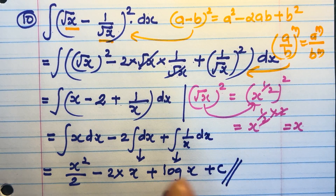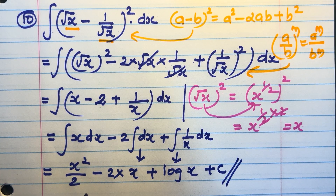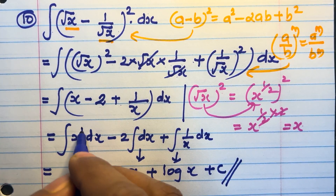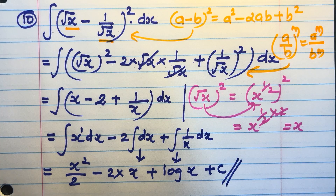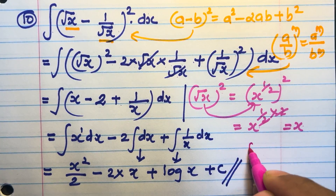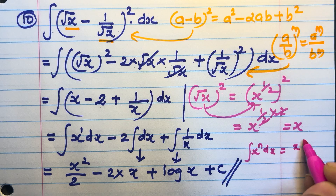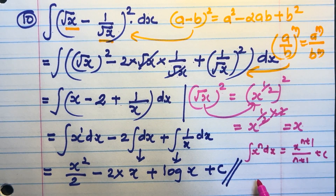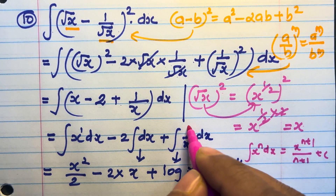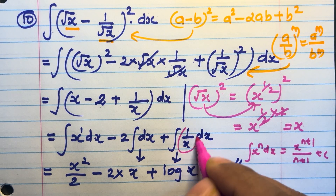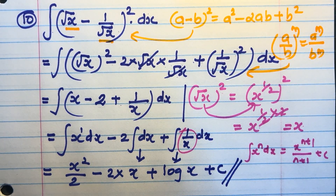These are all direct formulas. Integral x dx = x²/2, applying the formula: integral x^n dx = x^(n+1)/(n+1) + c. And integral (1/x) dx = log x. That is the direct formula.